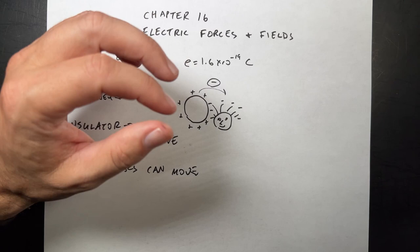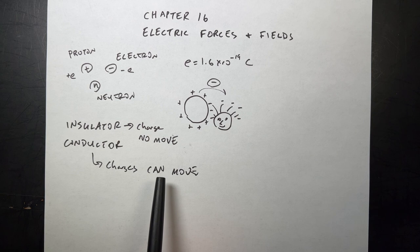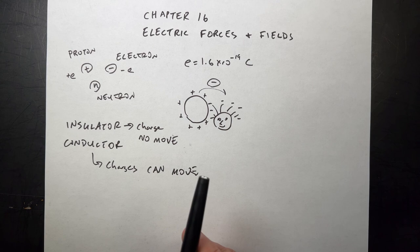So that's an insulator. Charges can move, but only if you melt the stuff, essentially. And in a metal, the charges can move. In a conductor, the charges are going to be on the outside.